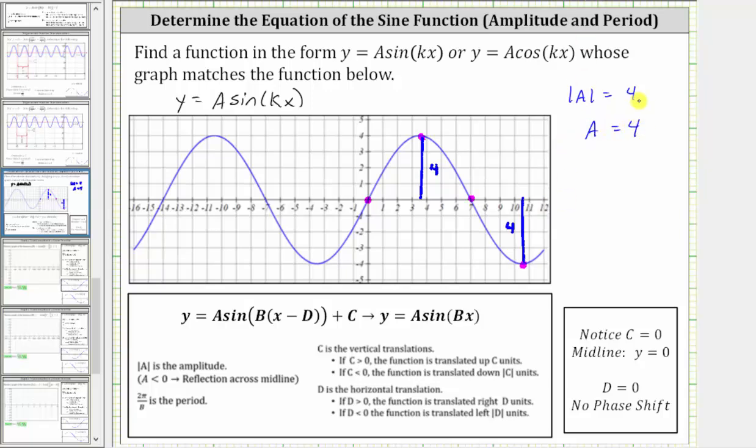Now let's look at the graph and determine the period. Notice if we start at the origin and move to the right, we do not have one complete graph of the sine function. So let's look on the left side. Notice how we do have a complete graph of the sine function starting here and going back to the origin.